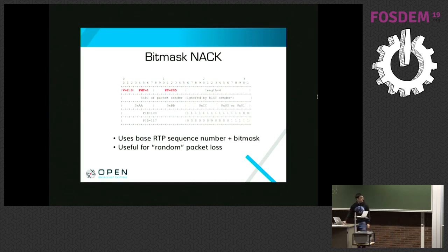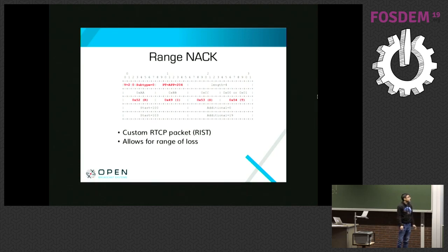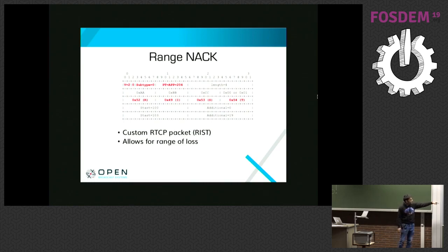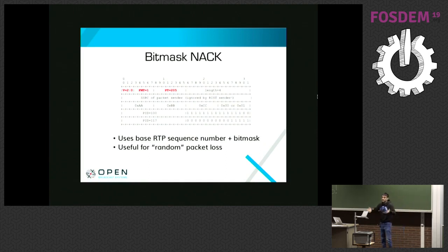They've also implemented a range-based NACK — if you lose 100 packets, this packet type signals ranges very quickly. They use application-specific type 204 with an ASCII string 'RIST' to signal it. Personally, I think this is over-engineering — if you've lost that many packets the overhead of adding a few more isn't consequential because you're going to have to retransmit so much anyway.